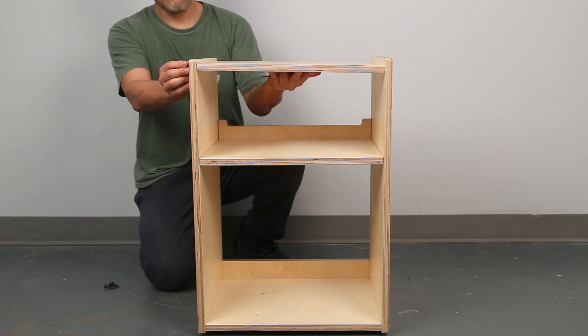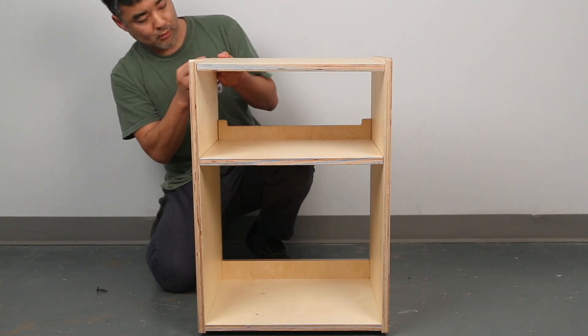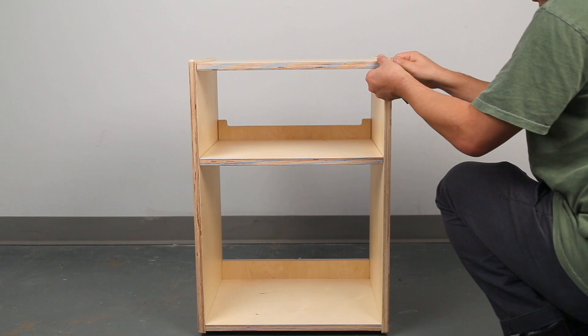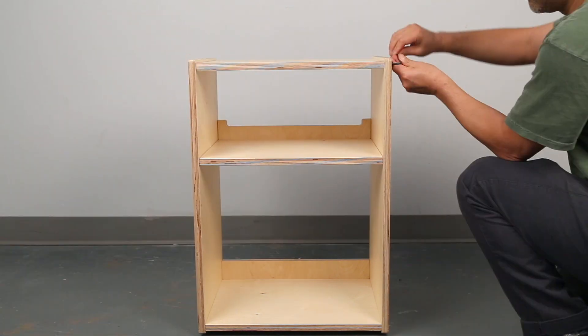For the top shelf, screw in screws that are diagonal from each other first, then the opposing diagonal set. Now you can fully tighten both the middle and top shelf screws.